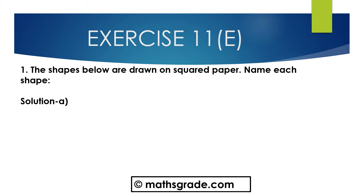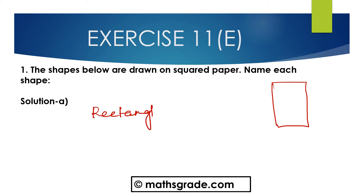Now we will solve question number 1. The shapes below are drawn on squared paper — name each shape. The first shape given is a rectangle. In a rectangle, opposite sides are equal: these two sides are equal and these two sides are equal. And all the angles — each angle is equal to 90 degrees. So this is the shape of a rectangle.